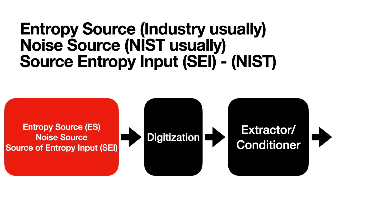In a non-deterministic random number generator — one which is producing numbers that are going to be different every time based on some physical process — there are a number of sub-blocks you need. The first is the entropy source. That's what people in the industry tend to call it. In NIST documents it has two names: it's called a noise source, and also a source of entropy input. They are sampling some physical phenomena which usually results in electrical noise, and that's where the non-deterministic part of the circuitry comes in. It creates the unknown source values that ultimately get turned into random numbers.